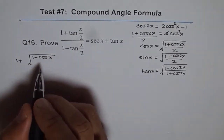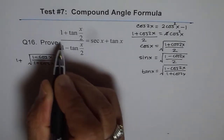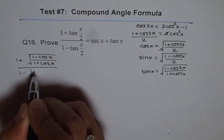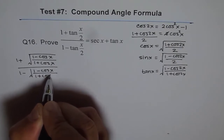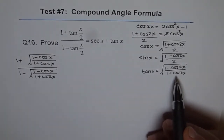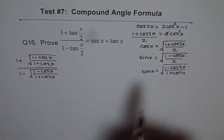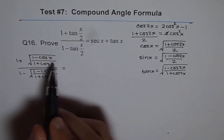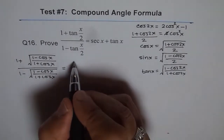So the numerator is 1 + √((1 − cos x) / (1 + cos x)), and similarly the denominator is 1 − √((1 − cos x) / (1 + cos x)). These are standard formulas applied directly. Now we multiply both numerator and denominator by √(1 + cos x). What do we get?